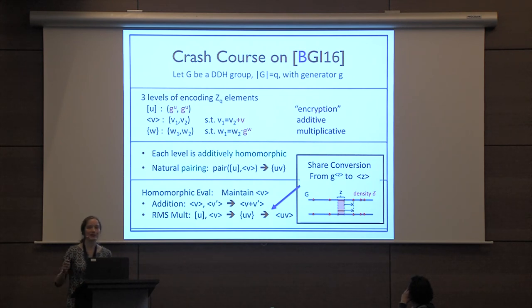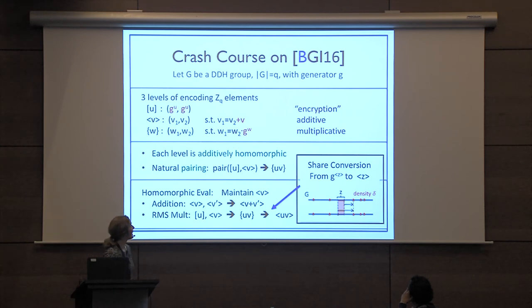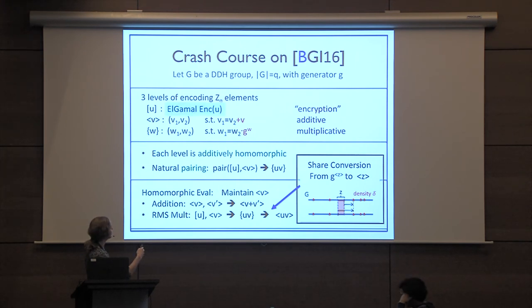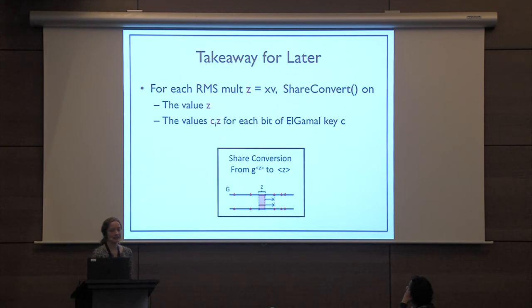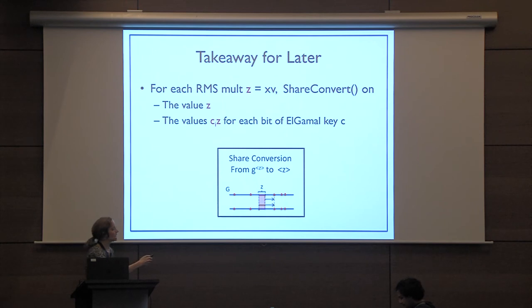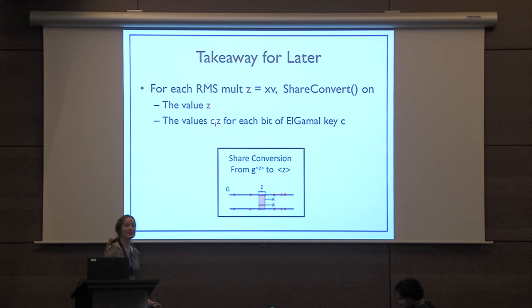There are details under the rug: it's not safe to give out g^U directly for a secret U. In reality, g^U is replaced by an ElGamal encryption of U, with some machinery to modify the pairing accordingly. A key takeaway: share conversion must be run for every RMS multiplication — once for the multiplied value, and once for each bit of the ElGamal secret key times that value.